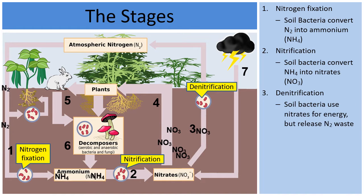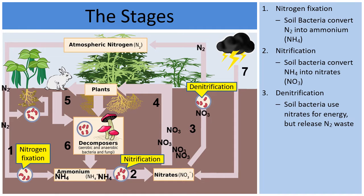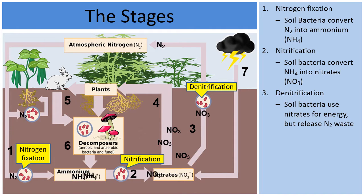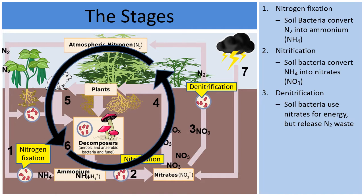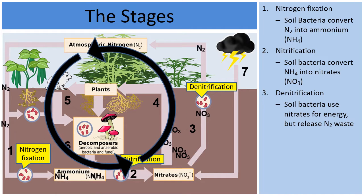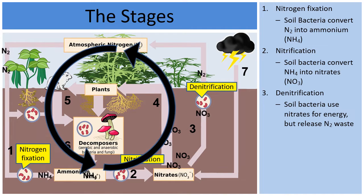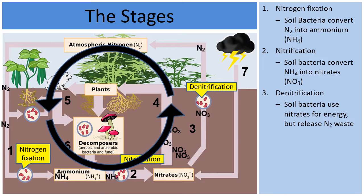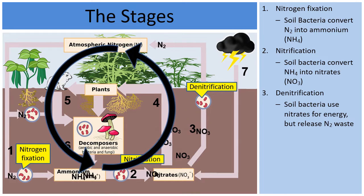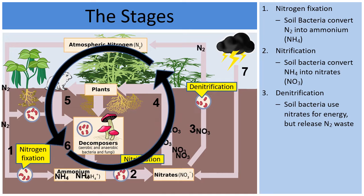Other bacteria in the soil take those NO₃ nitrates and through a process called denitrification will release nitrogen back into the atmosphere, completing a cycle involving just soil bacteria. So we already have a cycle involving bacteria. There is also an inner cycle in the diagram, covering areas four, five, and six.